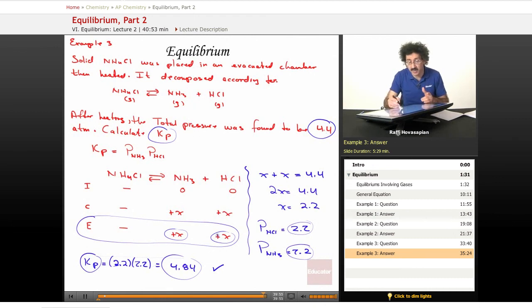Well, the total pressure is the sum of the individual pressures. There's only two gases in here, the NH3 and the HCl. Each one is X. 2X equals 4.4. X equals 2.2. At equilibrium, 2.2 atmospheres is hydrogen chloride gas. 2.2 atmospheres is ammonia gas. We plug that into the equilibrium expression. We multiply and we get 4.84. Standard equilibrium problem.